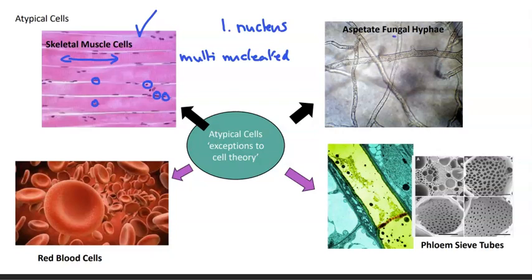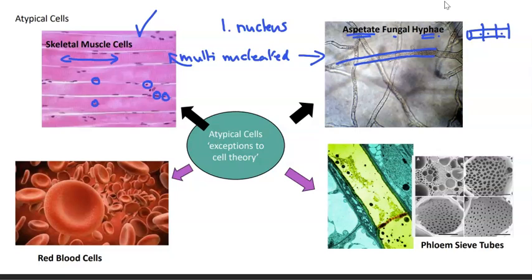If we look at aseptate fungal hyphae — hyphae being a tubular structure — aseptate means the tubes that form the fungal cells are not sectioned off into individual cells; the walls are incomplete. Once again, we have multi-nucleation within these fungal cells, with one long continuous strand of cytoplasm extending through the entire fungal hyphal structure.